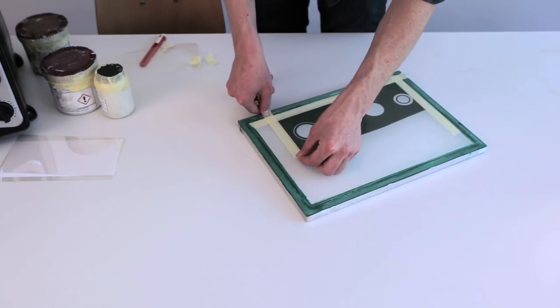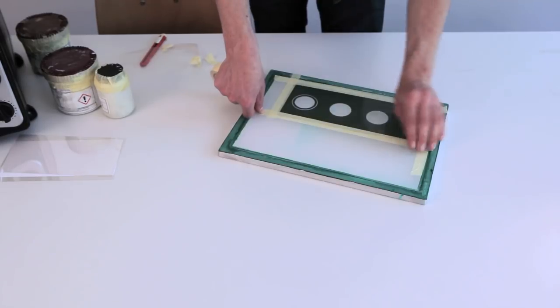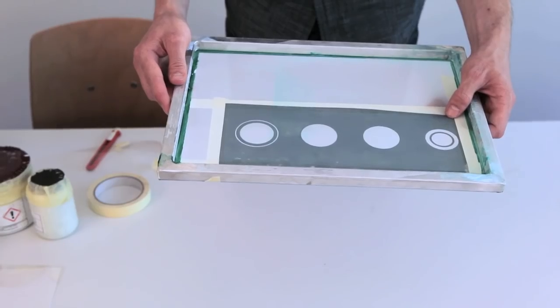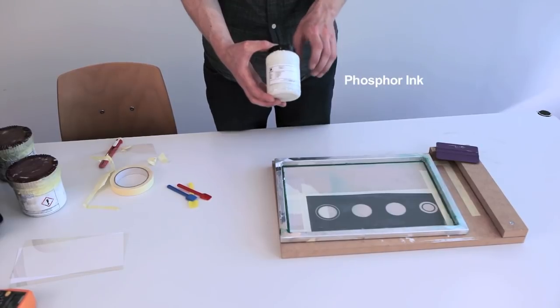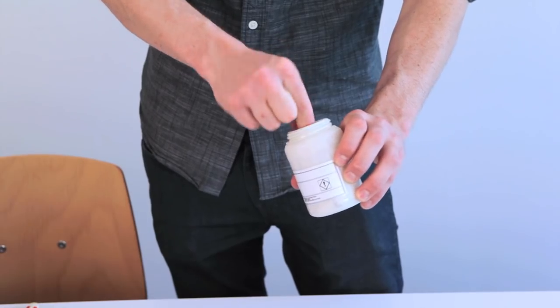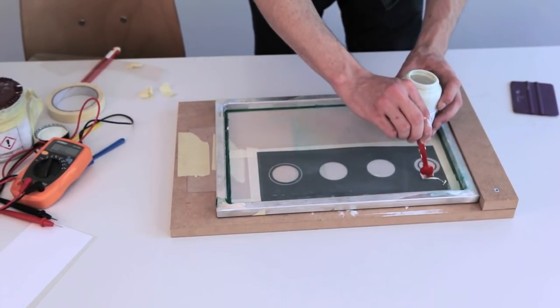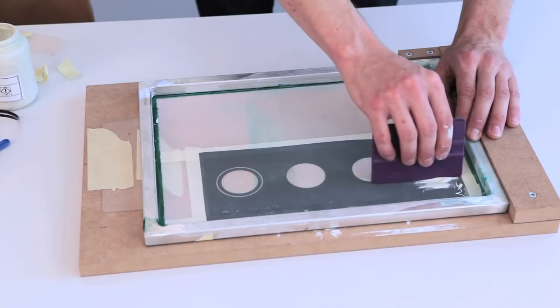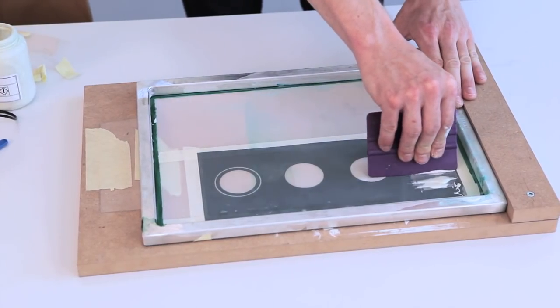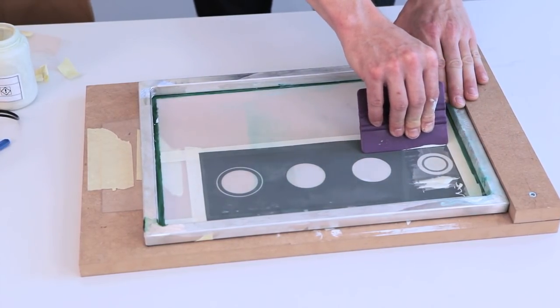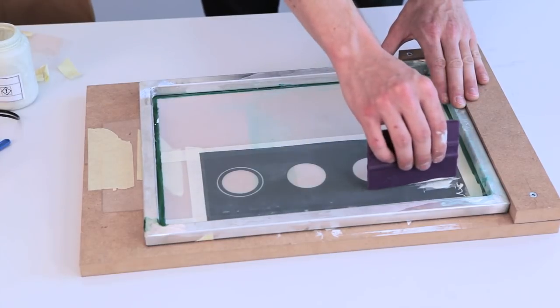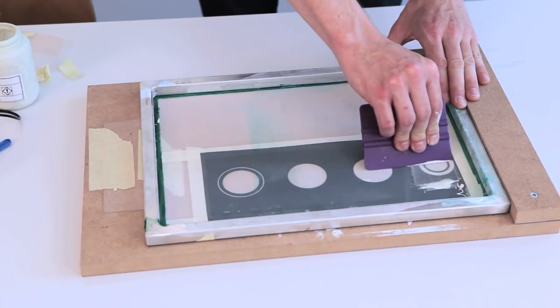Mask off any blank areas on the screen with some masking tape. We begin with the phosphor ink. Ensure that all the inks are mixed thoroughly before printing. We'll need to check the ITO to make sure that we're printing on the right side. Apply a small amount of the phosphor to the screen and use a squeegee to gently pull across the screen. If you miss any areas, go over again, but aim for a nice, even stroke across.